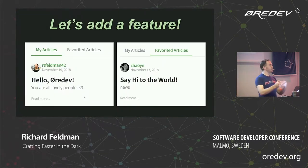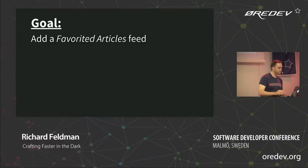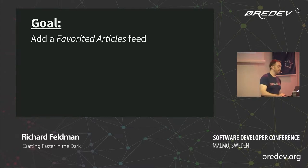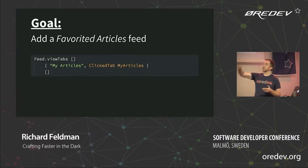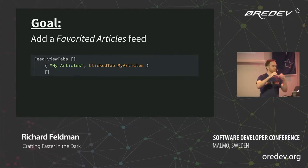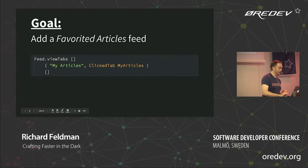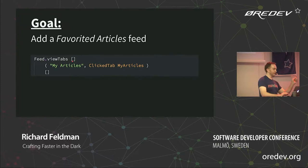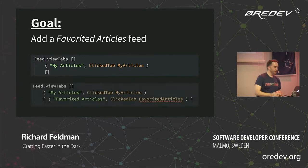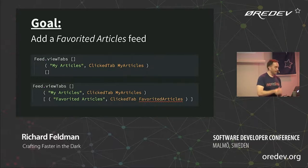Now let's go through that in more depth and talk through what these things are doing. Initially the goal was to add a new feed tab — a favorited articles feed. We had this code: feed.viewTabs with three arguments. The square brackets are a list, and parentheses are a tuple — two pieces of information. Basically we're saying we have no unselected tabs to the left of the selected tab, the selected tab goes in the middle, and we have a list of additional unselected tabs after it.